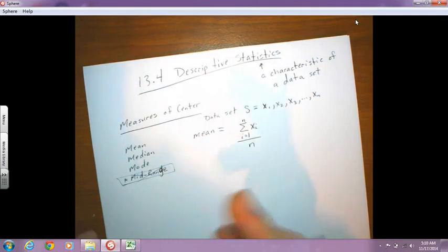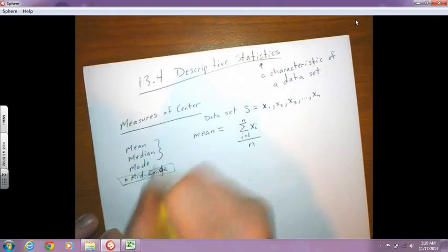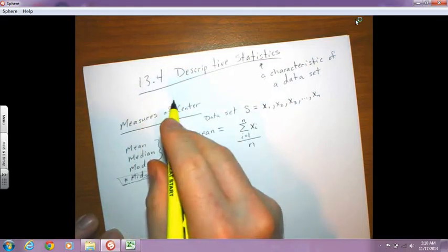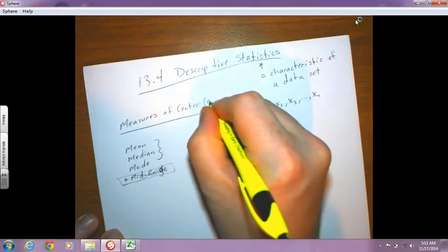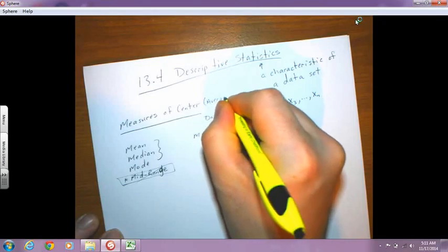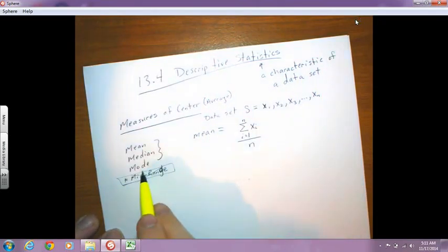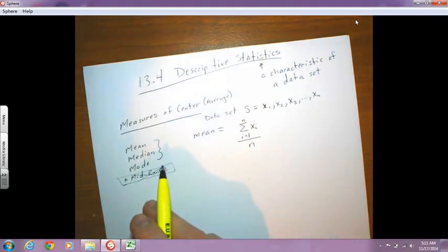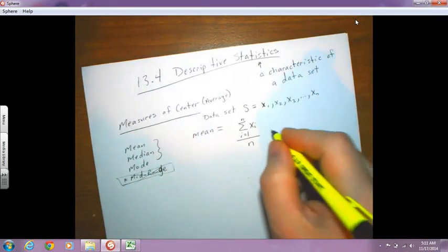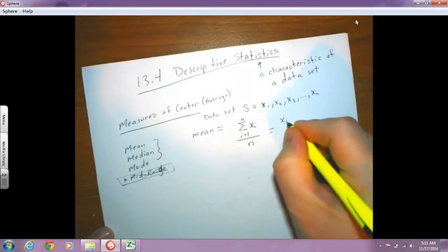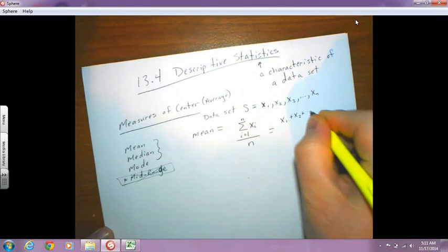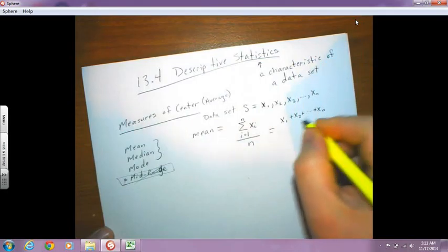So again, that's what you guys called average in the past. But we have to be careful with that word average in mathematics because technically all three of these or any measure of center for that matter can be referred to as the average. So I could talk about the mode being the average value for a data set. It wouldn't be the average that you guys are thinking of, but it would still mathematically be true. So yeah, for the mean, it's just what you guys would have thought of as average in the past. x1 plus x2 plus all the way up to x sub n. And then you divide by n.